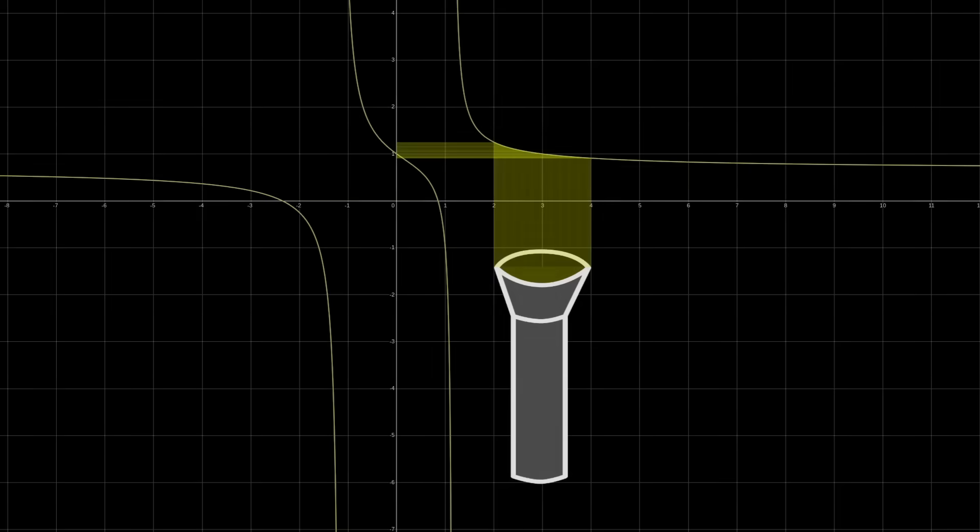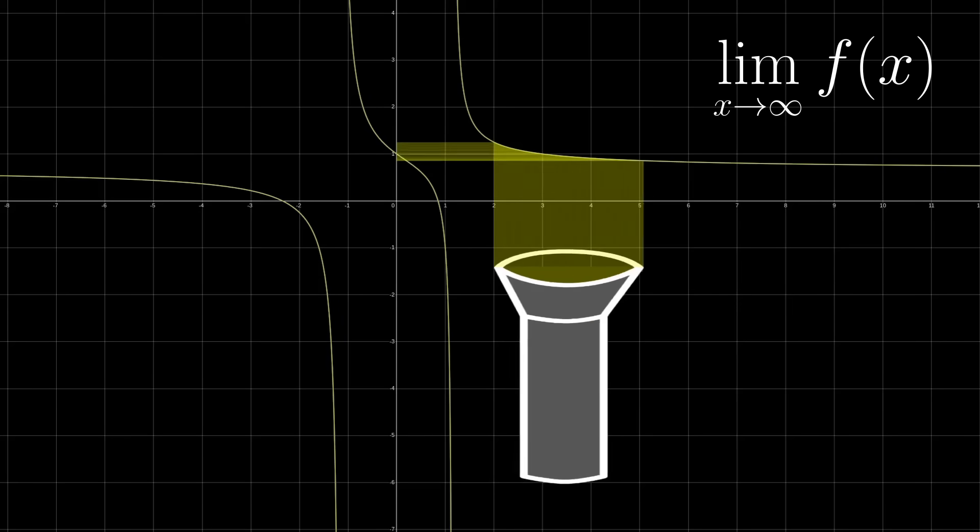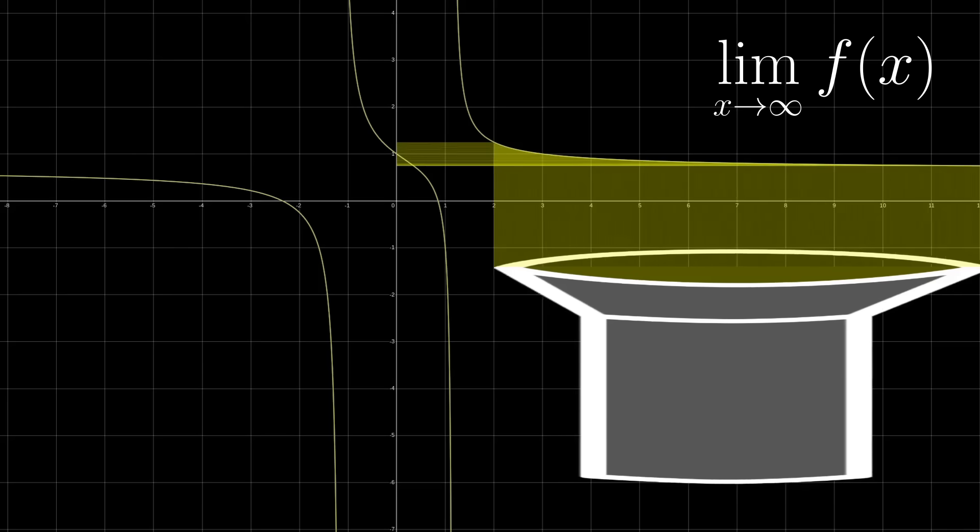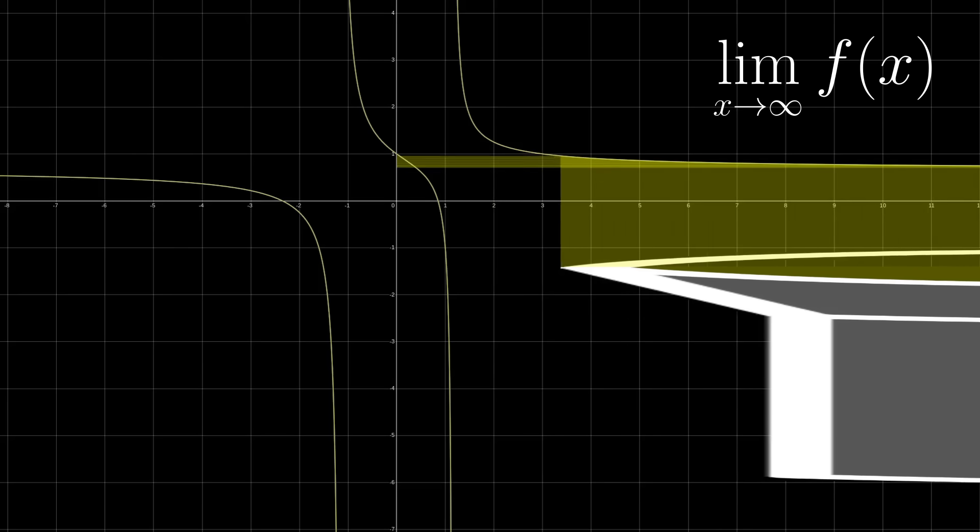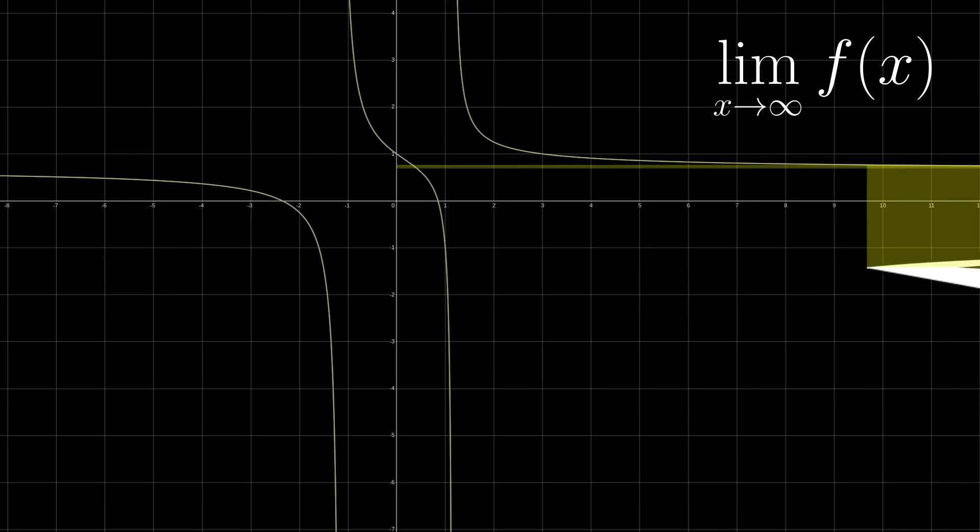Oh hey, one last example, because it looks really, really silly with the flashlights. Maybe you've run into the concept of a limit at infinity. Well, for that, you just have to imagine an infinitely wide flashlight beam going off to infinity. And as that beam moves to the right, if the reflection on the y-axis converges to a point, you've got yourself a limit.